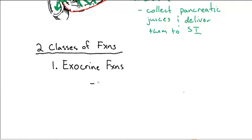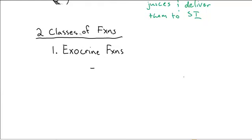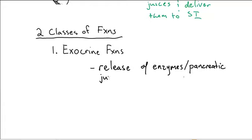Exocrine refers to the release of enzymes. So the E's go together - exocrine and enzyme. It refers to the release of enzymes or pancreatic juices into the small intestine.